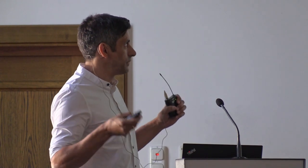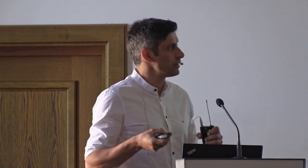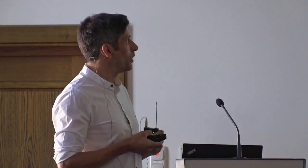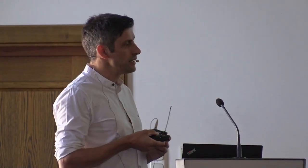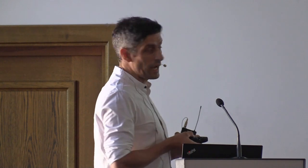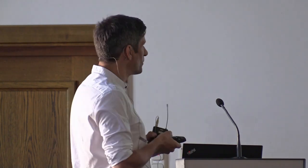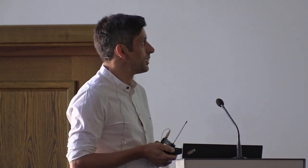This is the idea. We will have a nine-Tesla dipole magnet with a warm bore, inside which a cryostat can fit. Inside this cryostat, we can have the booster composed of 80 adjustable dielectric discs of large surface — 1.25 meters — and there will be a mirror at one side to direct the axion-induced electric field toward the focusing ellipsoid mirror and then toward the horn antenna or receiver system. The main challenges of this experiment are the booster mechanics — moving 80 discs inside a strong magnetic field — the magnet itself, and of course the receiver operating cold inside this large, strong B-field environment.